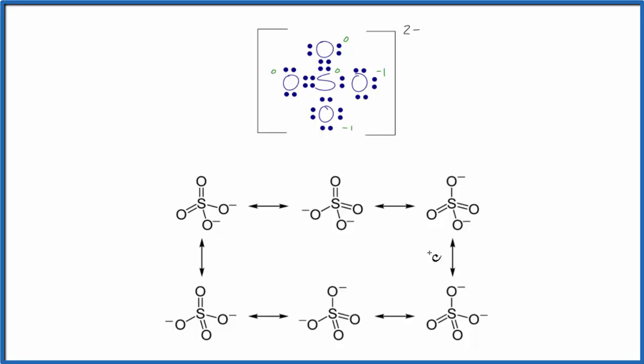So for the sulfate ion, there are six equivalent resonance structures. And these are the major contributing resonance structures to the SO4²⁻ ion.